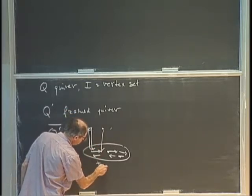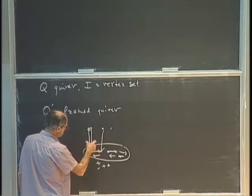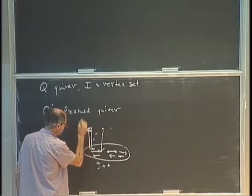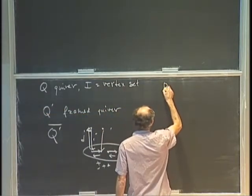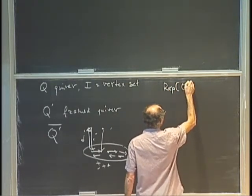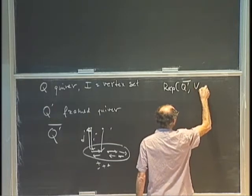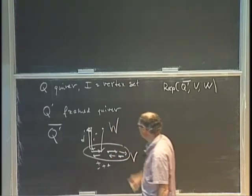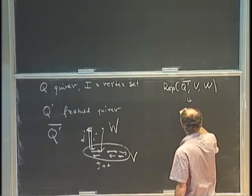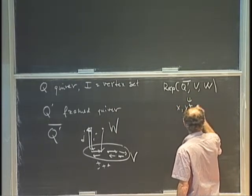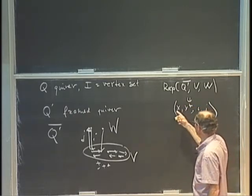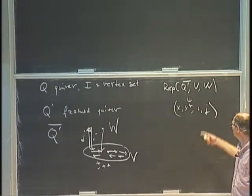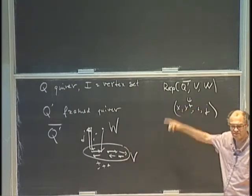The edges here are X and X star. The edge incoming to the old vertex is I, and the outgoing edge is J. A point in rep Q prime bar VW, where the V spaces are at the bottom level and the W spaces at the top level, is a quadruple (X, X star, I, J) of linear maps: X maps between vector spaces V, X star are the reversed maps, I are maps from Ws to Vs, and J are maps from Vs to Ws.